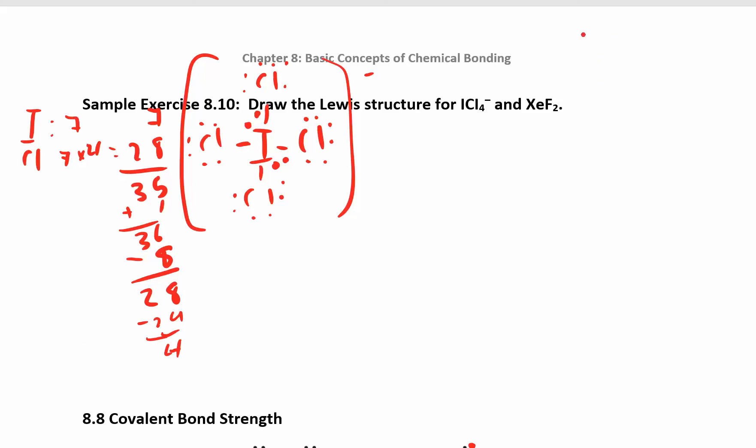We can also do the Lewis structure for XeF2. Xenon has eight. So remember when I said noble gases don't form compounds. This is one of the weird compounds that can actually form under some strange circumstances. So we have 20, 22 electrons there. So Xe is going to go in the middle. F on both sides. Minus two, four. So I have 18, two, four, six, eight, 10, 12. There's six left over. Two, four, six.